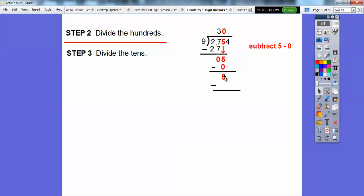So we carry that down, and now we subtract 5 minus 0. That's the big step where kids miss is this 0 part. 5 minus 0 is 0, and then we bring down the next number, that 4. Now we're going to divide the ones. So 9 goes into 54, 6 times. 9 times 6 is 54. So we get 0 when we subtract.